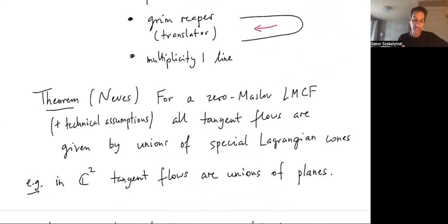There is a fundamental result due to Neves, which says that in Lagrangian mean curvature flow, if you impose the zero Maslov condition, and some technical assumptions about having uniformly bounded area ratios and uniformly bounded Lagrangian angles, then all tangent flows are unions of special Lagrangian cones. In particular, they're all going to be cones, so they're invariant under dilation.